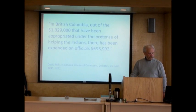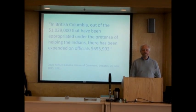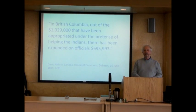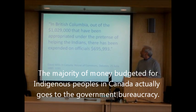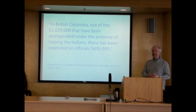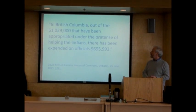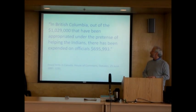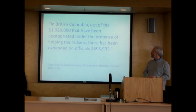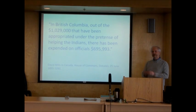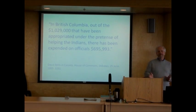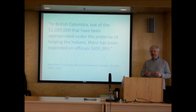In 1895, for example, David Mills, who had been Minister of the Interior and also the Superintendent General of Indian Affairs — the Cabinet Minister responsible for Indian Affairs — said this in the House of Commons: 'In British Columbia, out of $1,029,000 that have been appropriated under the pretense of helping the Indians, there has been expended on officials $695-plus thousand.' So the money being spent so-called on Indians is actually going to the bureaucracy.